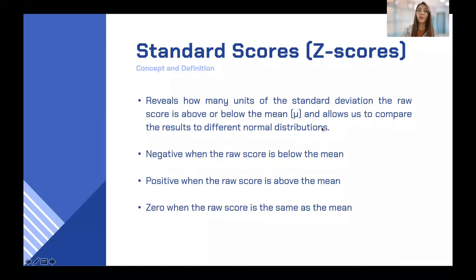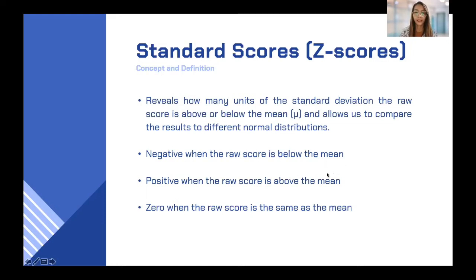When we are finding the Z-score on the graph, it is either positive or negative. It is negative when the raw score is below the mean, positive when the raw score is above the mean, and zero when the raw score is the same as the mean.